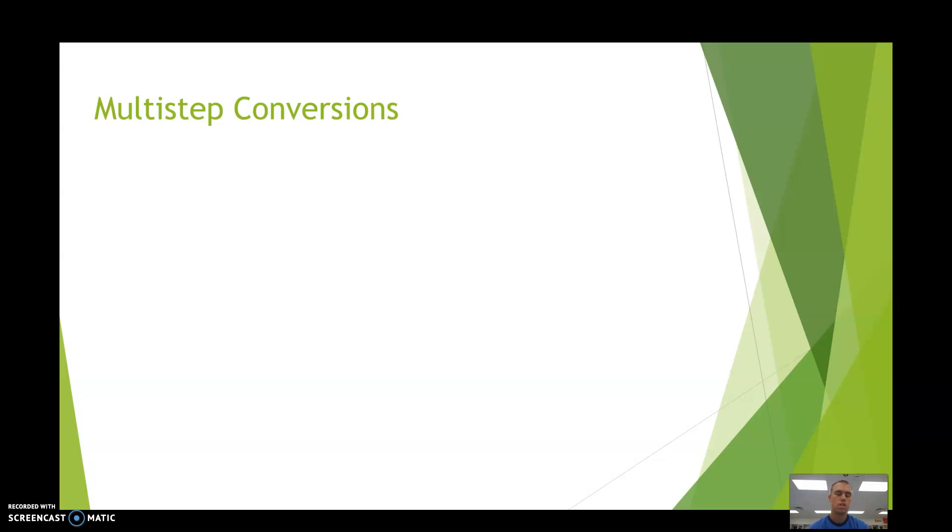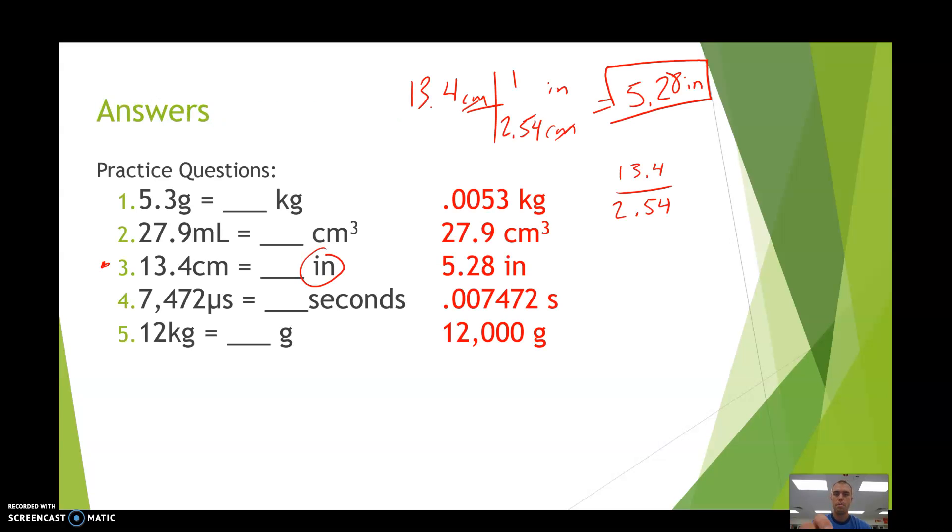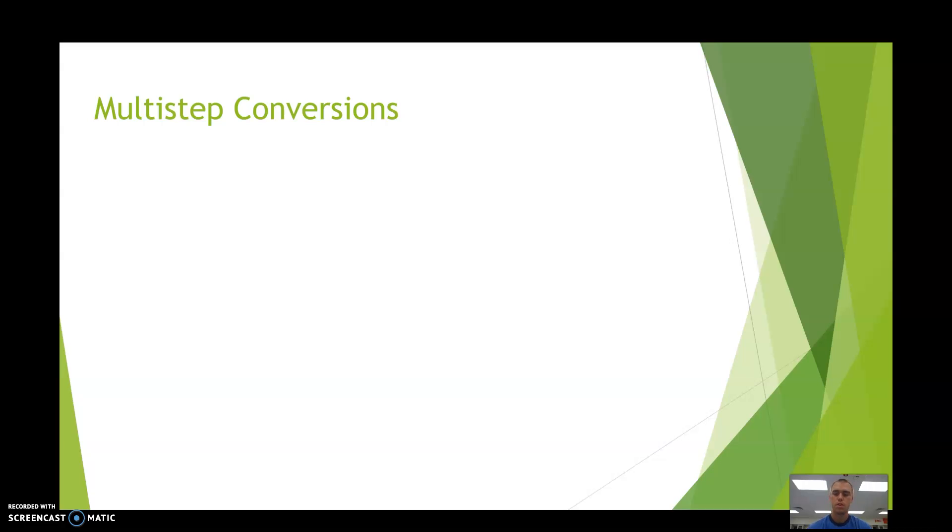So the second part of that conversion worksheet is about multi-step conversions. All of these over here are one step. We can do this conversion in one track, so that's a one-step conversion. Over here, we're going to have multi-step conversions. So let's look at one. We're going from centimeters to kilometers. So we need to figure out how many kilometers are in 1,365 centimeters. We don't have a direct conversion to go from centimeters into kilometers. We could do it, but it'd be really tough to figure out those powers of 10 and keep it accurate and do it the right way. So we're going to do this in two steps.